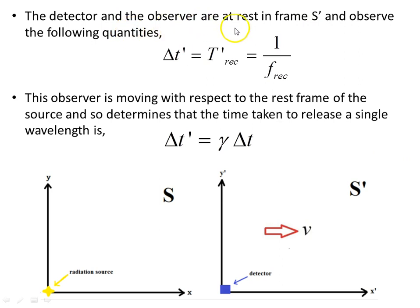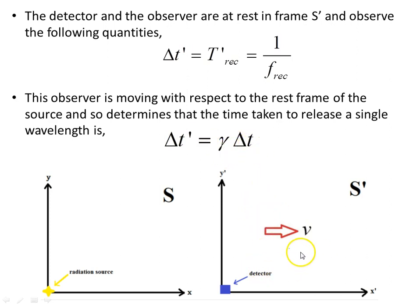The detector and observer are at rest in frame S' and observe the following. In S', the time taken to receive a full wavelength is delta T', the received period, which equals 1 over the received frequency. This observer is moving with respect to the rest frame of the source, so the time taken to release a single wavelength as detected in S' is delta T dash = gamma times delta T. The observer in S' is moving relative to S and measures dilated time.